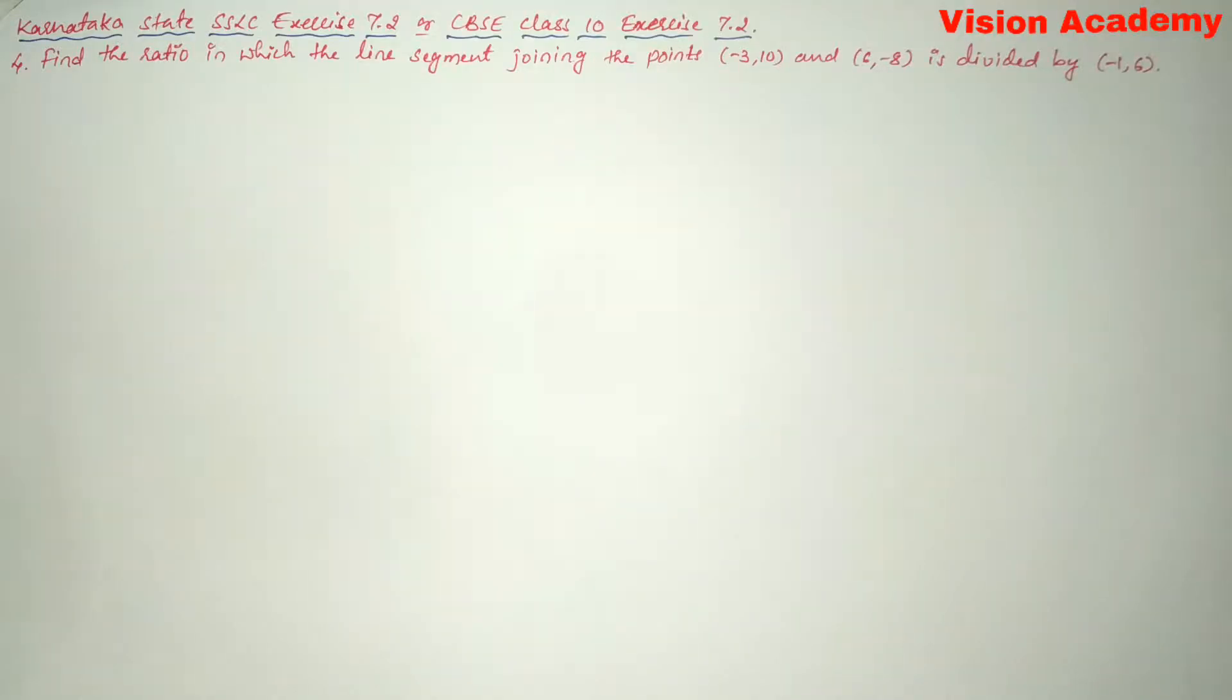Hello, my dear students, my name is Anumant Ladwa. Welcome to Vision Academy. In this video, we are going to solve Karnataka state SSLC exercise 7.2 or CBSE class 10 exercise 7.2, question number four. Find the ratio in which the line segment joining the points (-3, 10) and (6, -8) is divided by (-1, 6).